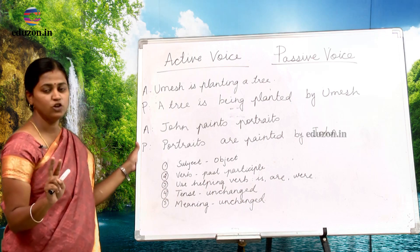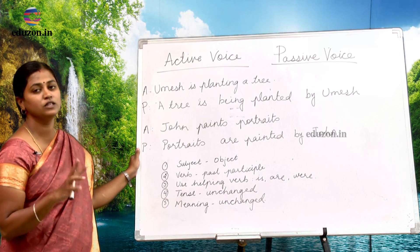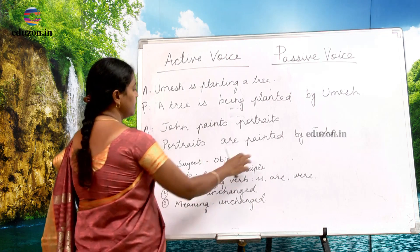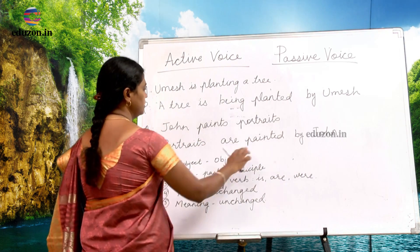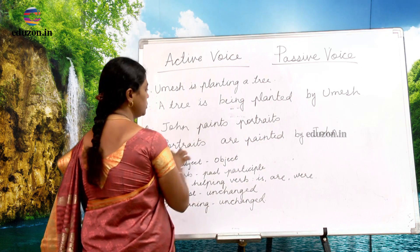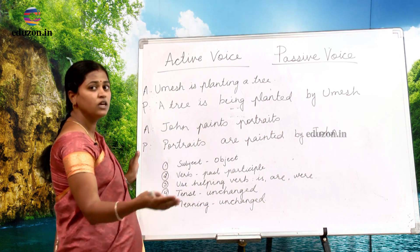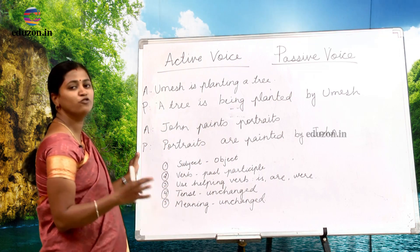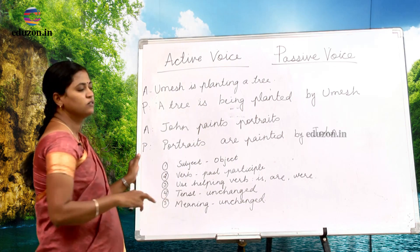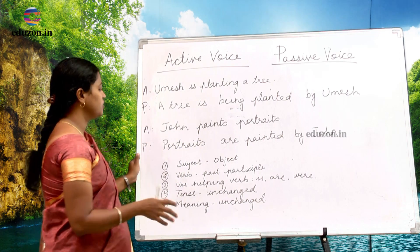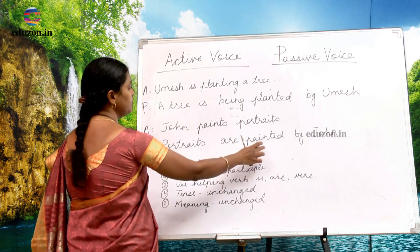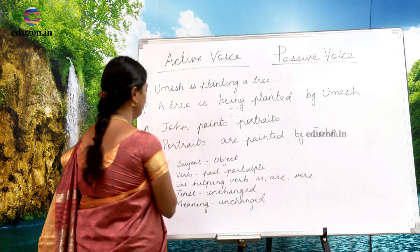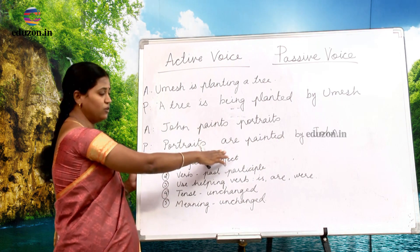This is the second rule — the verb becomes past participle form. The third rule: you cannot directly write the past participle alone; for example, you cannot say 'portraits painted by John.' You actually use some auxiliary verb or helping verb before it — like 'are,' 'is,' 'were,' etc. So before the past participle in passive voice, you always use a helping verb.